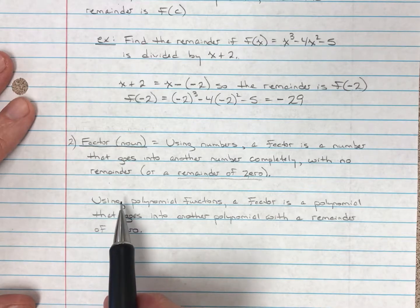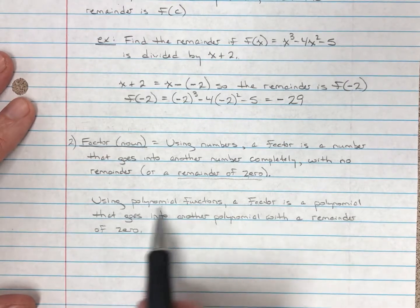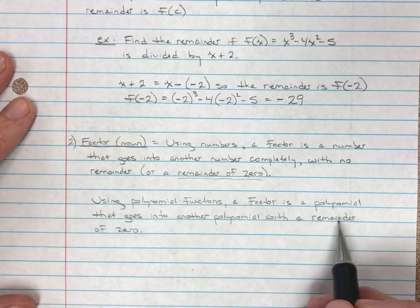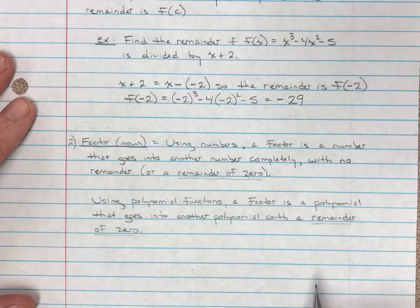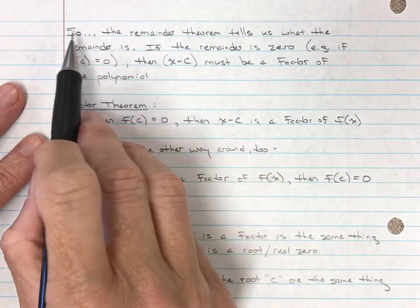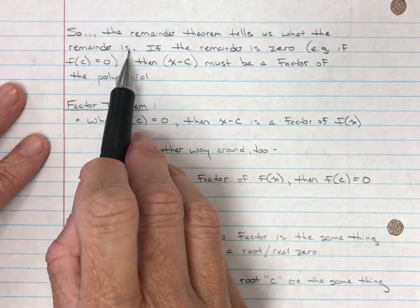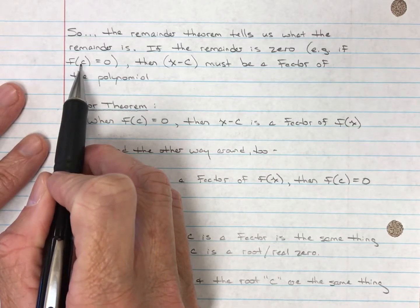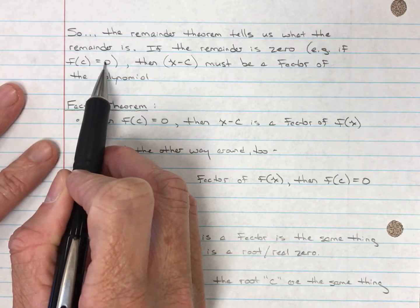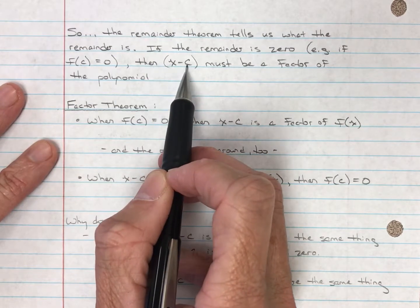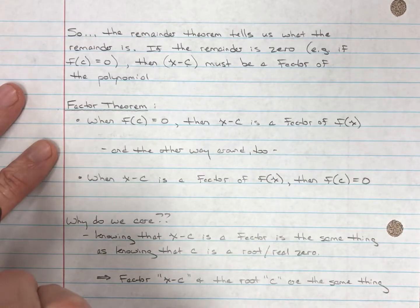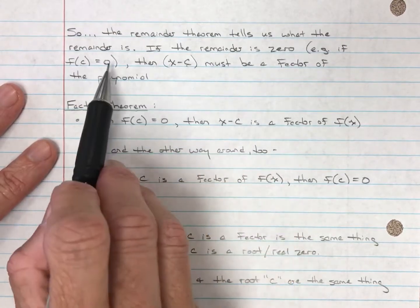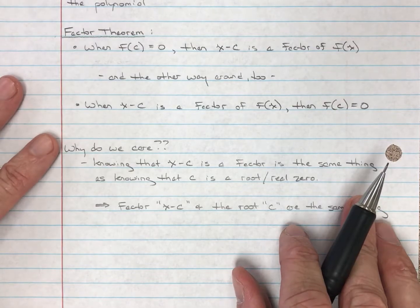The remainder theorem tells us what the remainder is. If the remainder is zero — in other words, if the value of c goes into the function and out comes a zero — then x minus c is a factor of the polynomial. It goes into it evenly, with a remainder of zero. Let's put this together in the factor theorem.